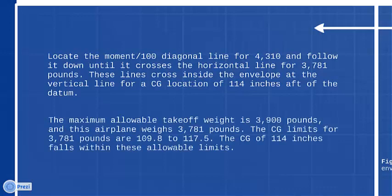The maximum allowable takeoff weight is 3,900 pounds, and this plane weighs 3,781 pounds. The CG limits for 3,781 pounds are 109.8 to 117.5. The CG of 114 inches falls within these allowable limits.